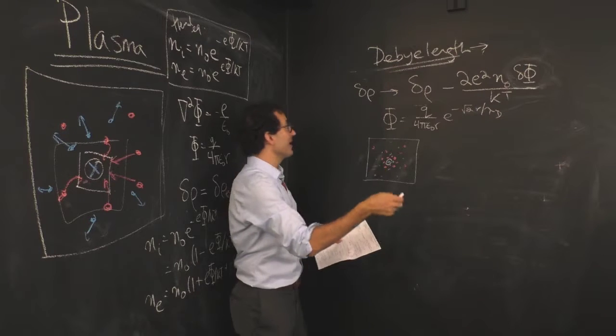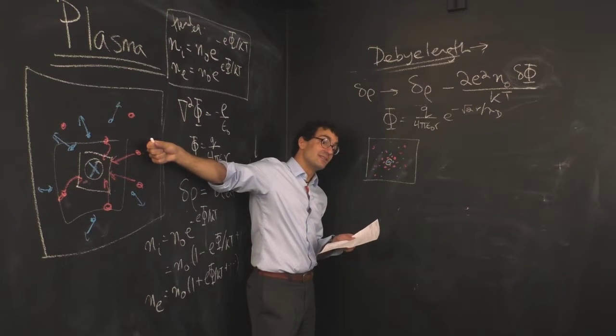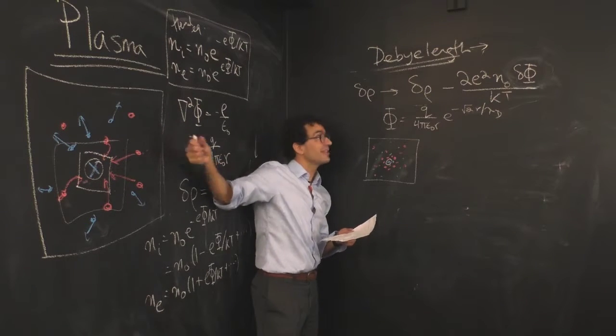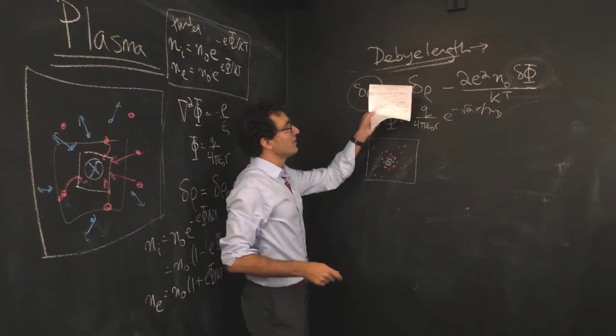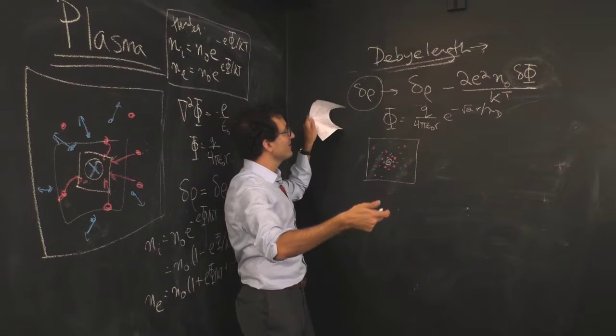One way to think about what happens when you take a charge and put it in this background of positively and negatively charged particles, this plasma in thermal equilibrium, is that the very value of the charge itself, rho, or delta rho in the case the charge is a small perturbation to the overall field,